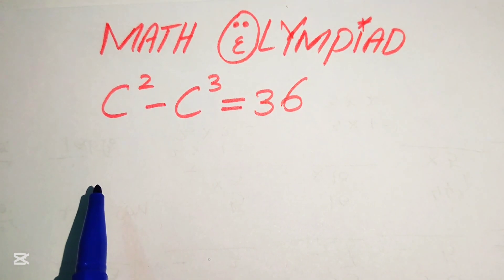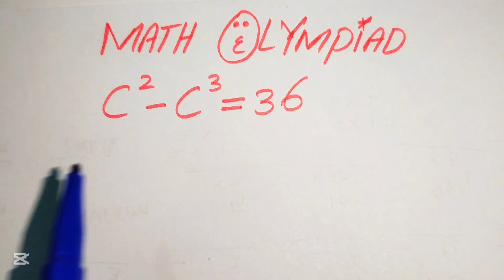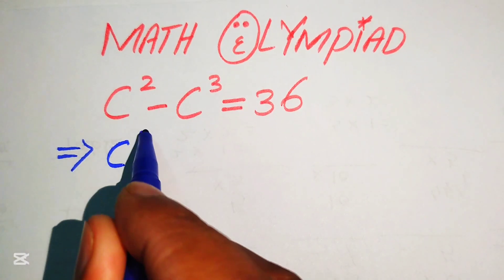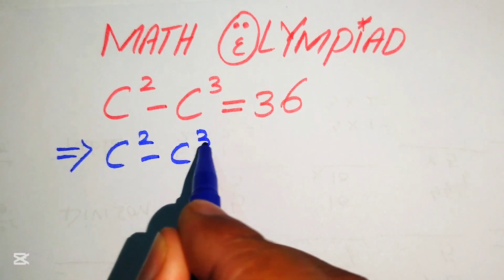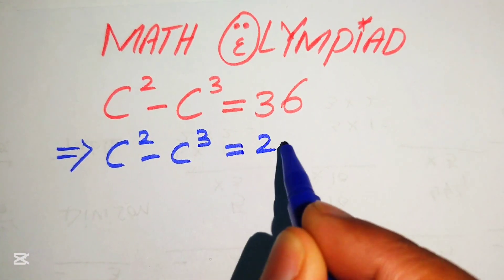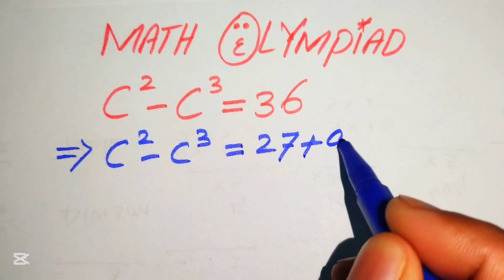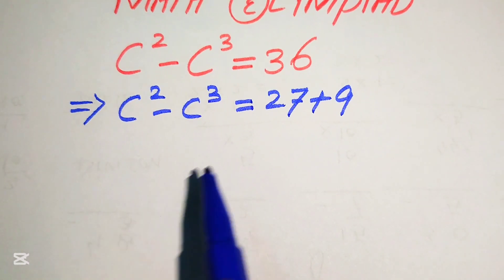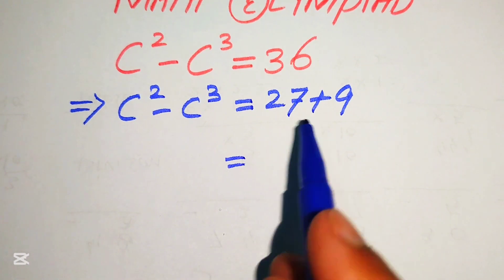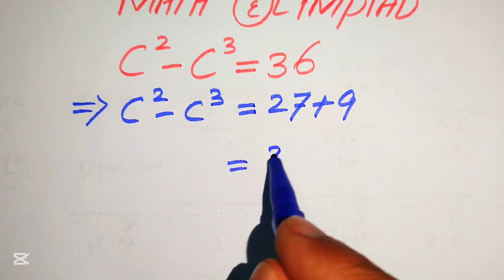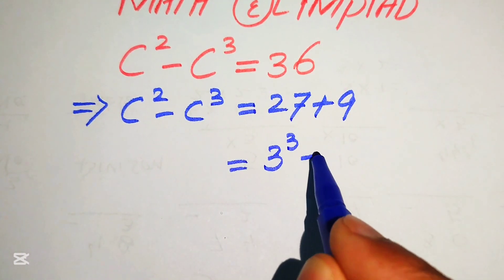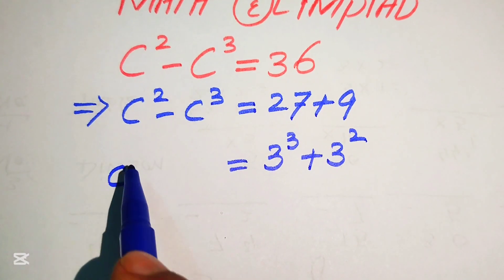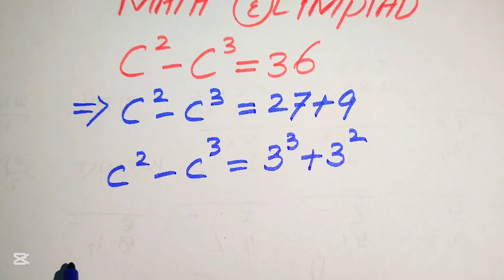The very first step is to focus on the right-hand side, where we have 36. We rewrite 36 as 27 plus 9. Then we find the prime factors: 27 equals 3 cubed, and 9 equals 3 squared. On the left-hand side we have c squared minus c cubed.